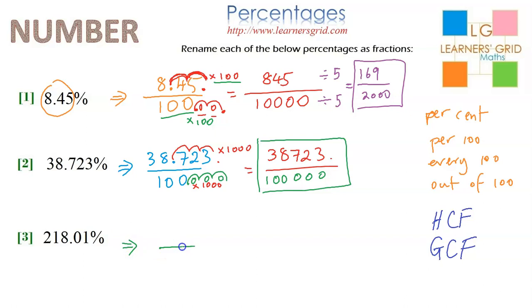And the final one here, again, it's going to be over 100 to start with: 218.01. You can immediately see what's going to happen. It's going to be 21,801 over 100,000.